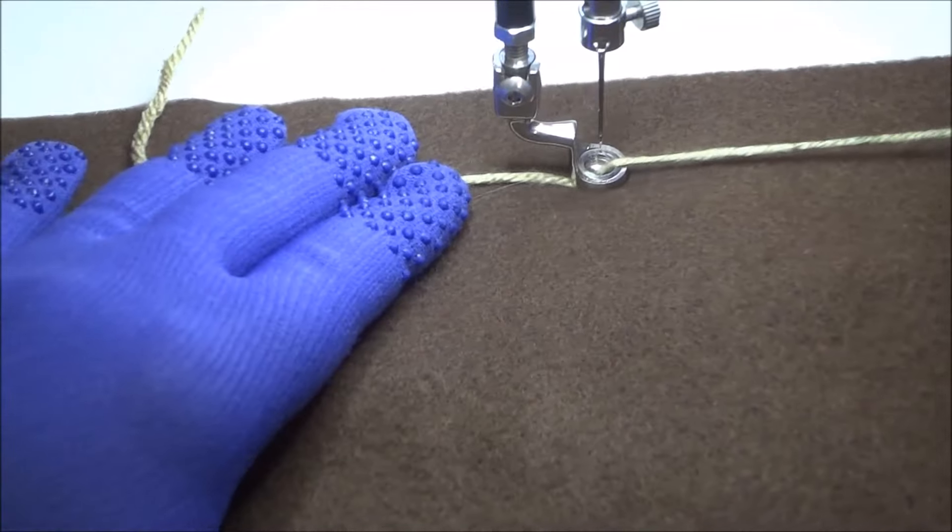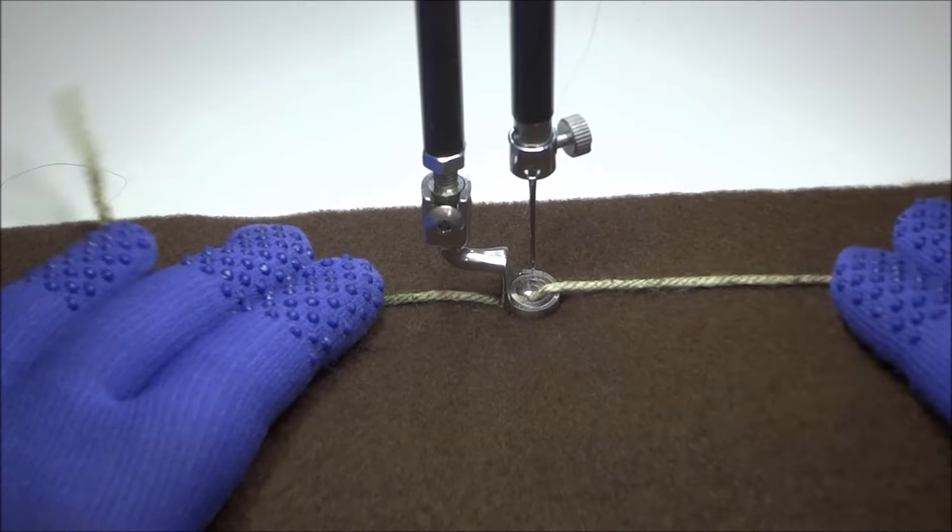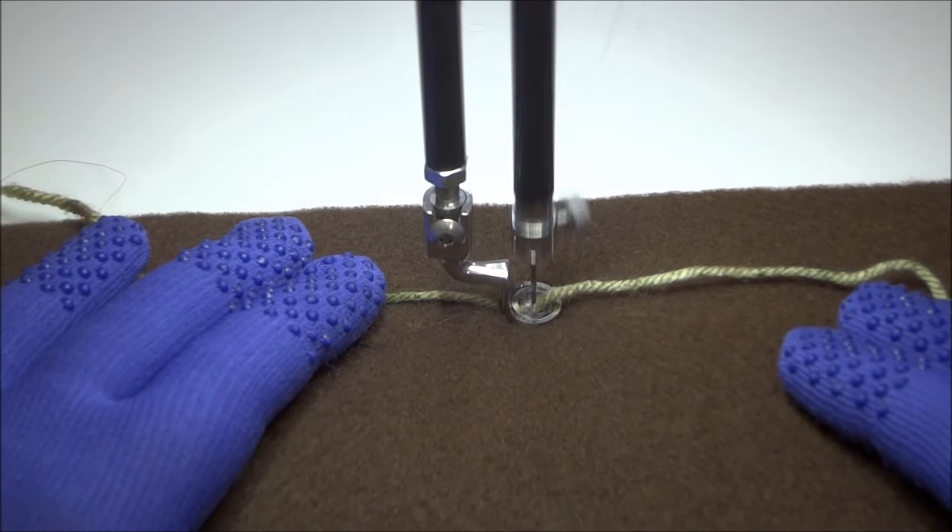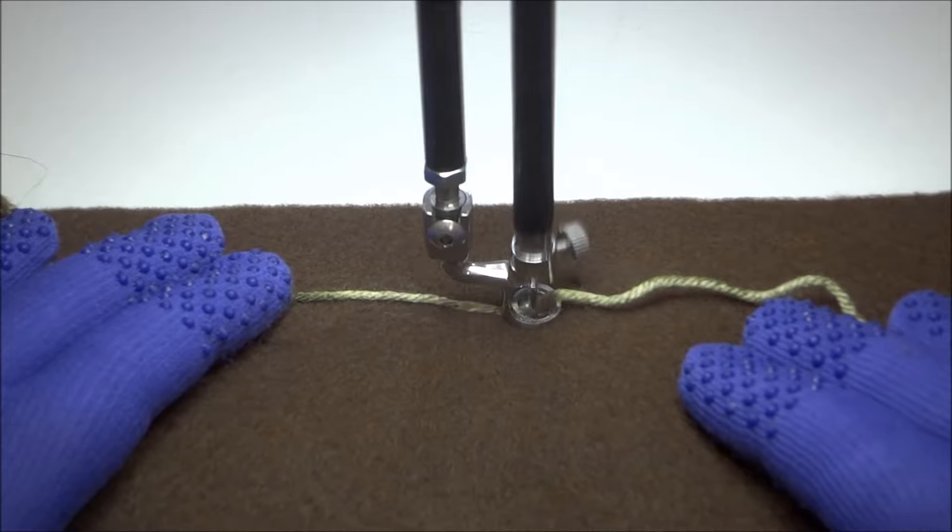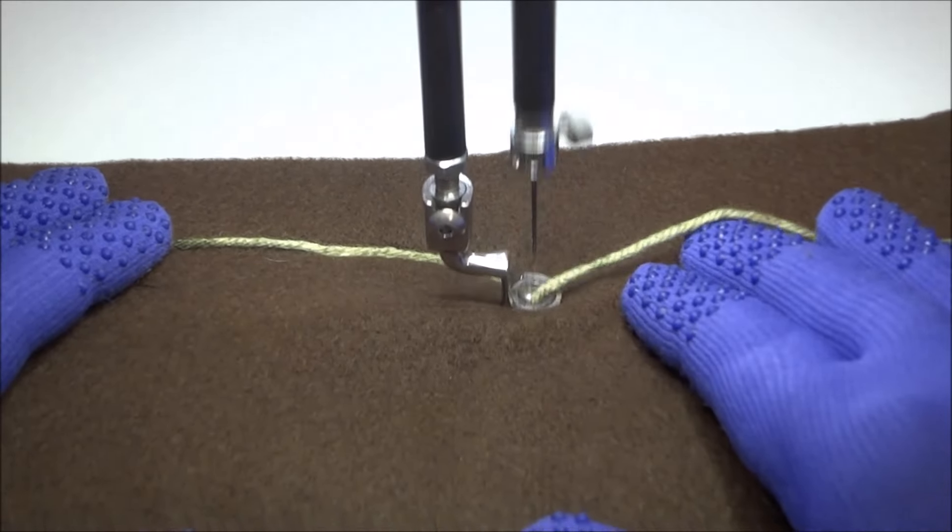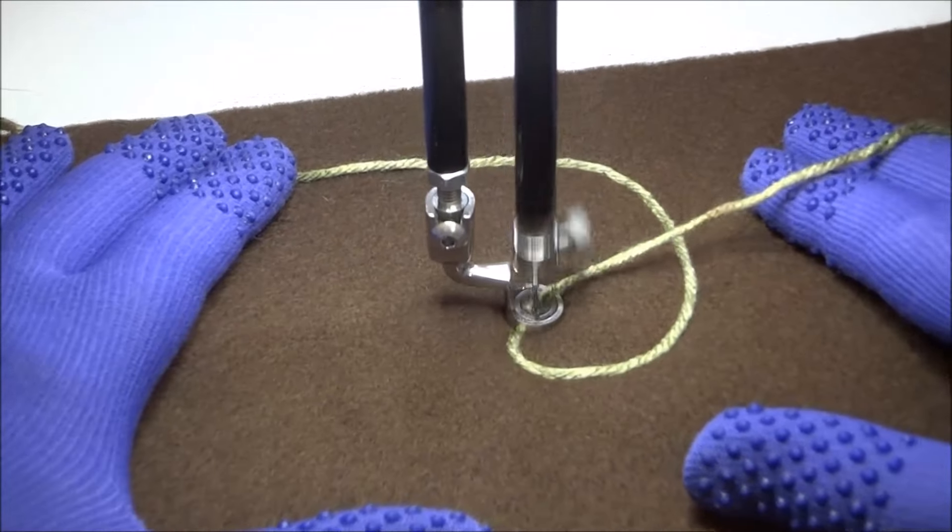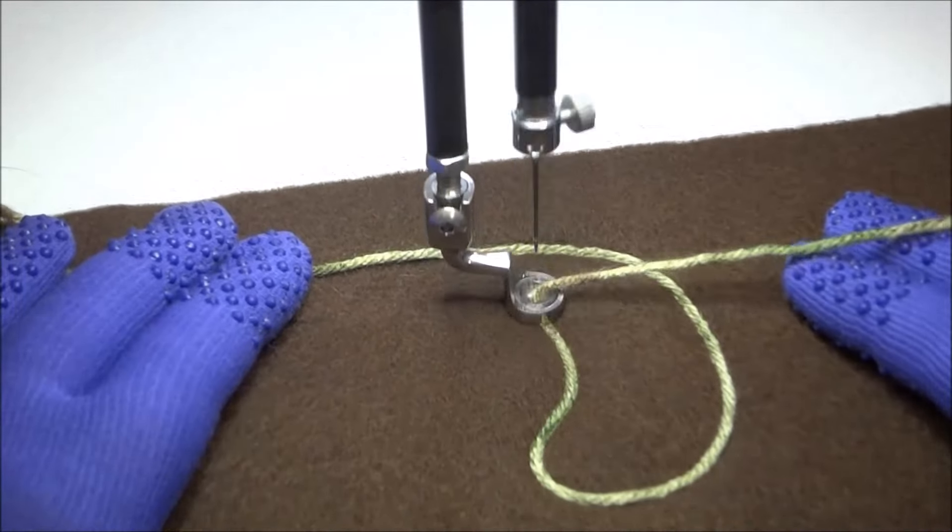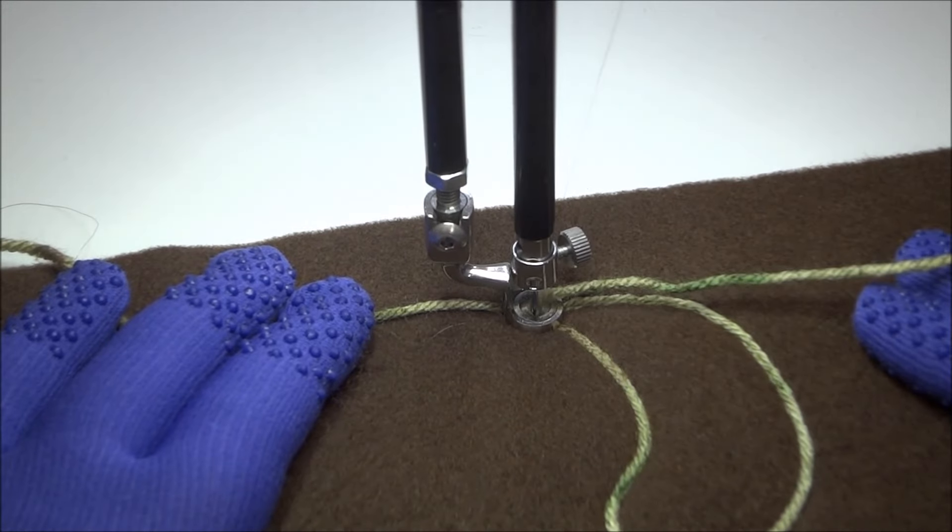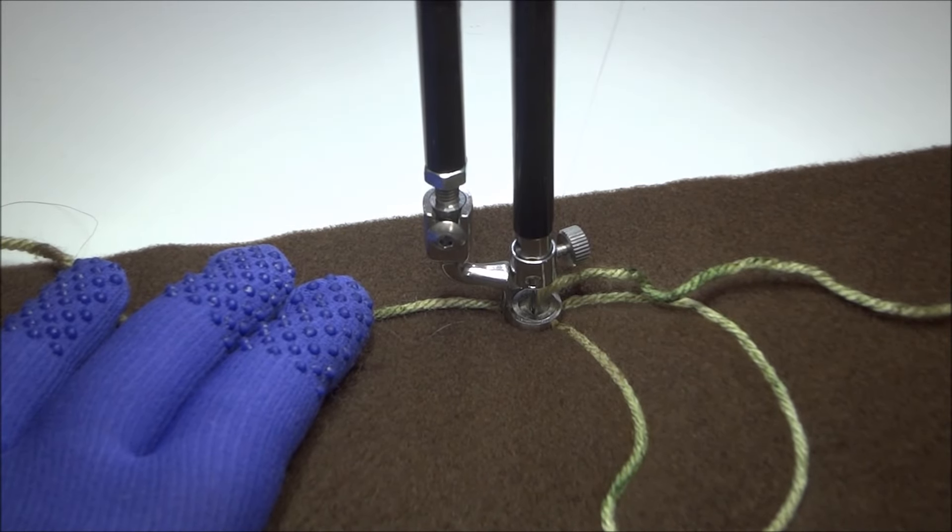If you really have to struggle to get the yarn through the hole, you're best to go to the next size up. Your yarn should float freely through the hole, as it does here. And when it does that, the hole is so small, and the yarn just fits, so the needle is able to puncture the yarn right in the center as it goes.